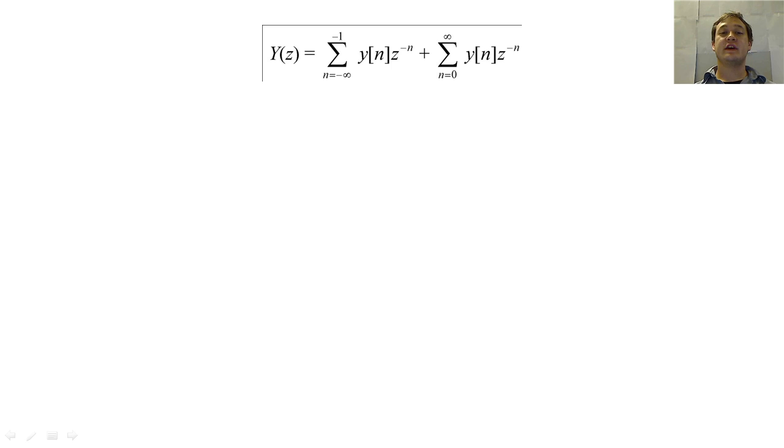In order to understand how this two-sided Z-transform works, let's split our sequence into two parts and perform the Z-transform on the two sides.